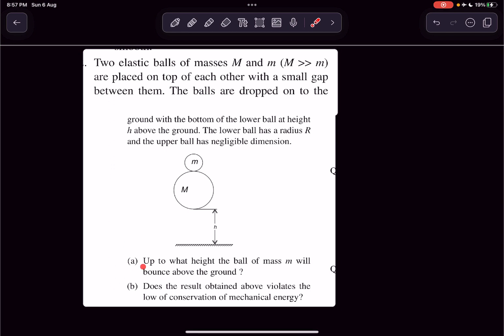In question A, we have to find up to what height the ball of mass m will bounce above the ground. And in option B, we have to discuss if the above obtained result violates the law of conservation of mechanical energy.